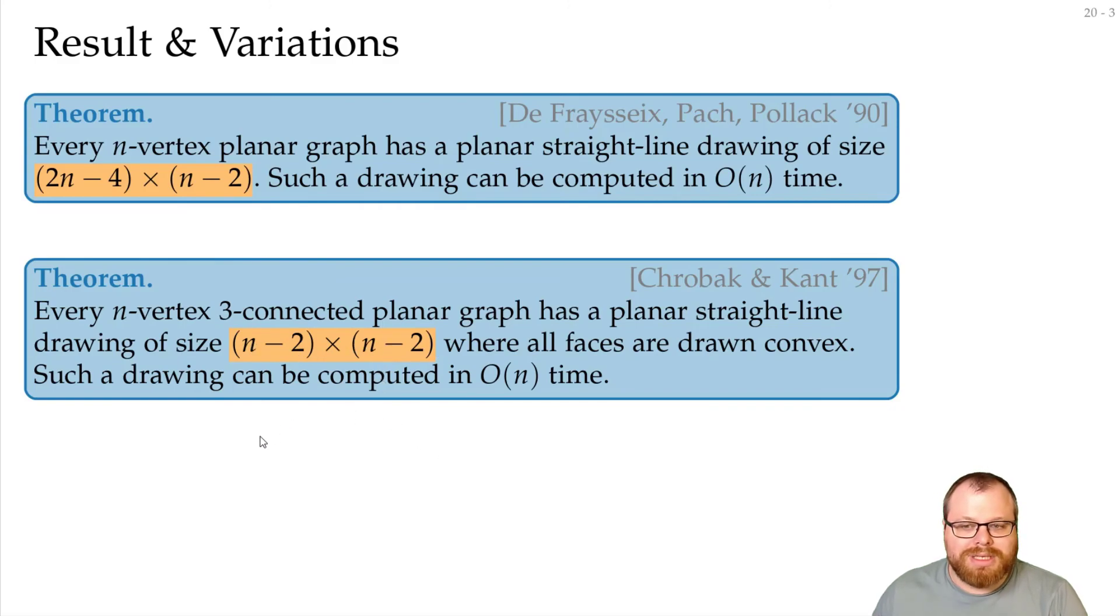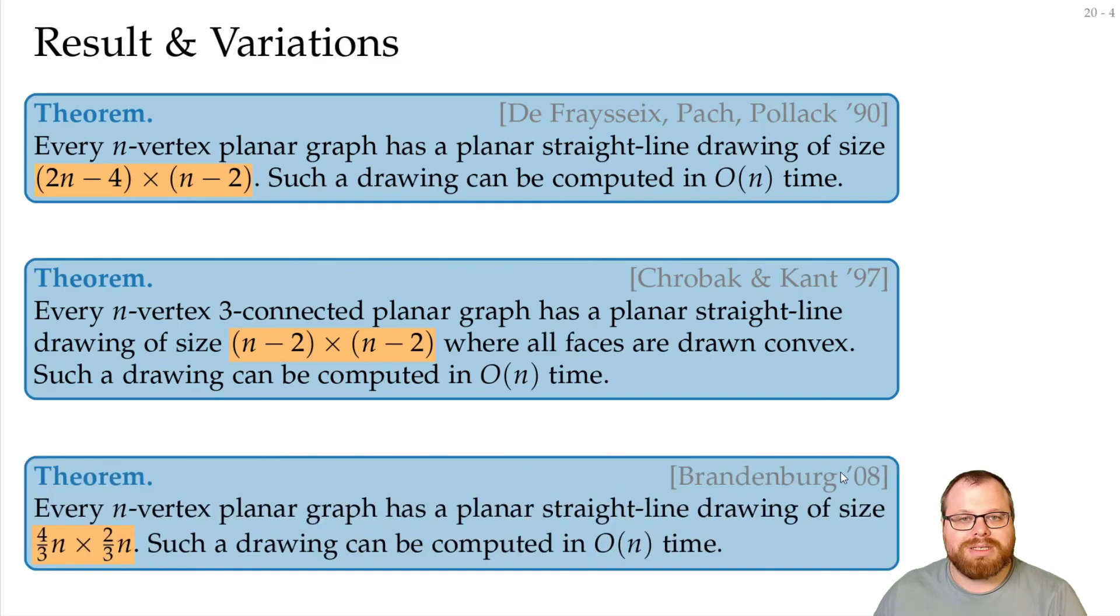And this area bound has further been improved by Brandenburg in 2008 to (4/3)n × (2/3)n. So it's a bit wider, but it's not so high. And this bound here is n-squared, while this here is only 8/9 n-squared. So this is slightly better. And the best-known lower bound so far is 2/3 n-squared.